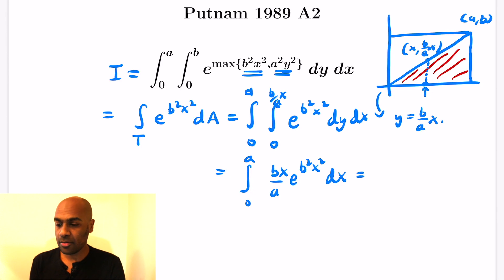Now we can actually integrate this with a substitution. Doing that we'll get, because we have a b squared x squared in the exponent, the derivative of that is 2b squared x. That allows the substitution, but we have to remind ourselves that our integral is actually twice the integral over the triangle by the symmetry with the other triangle on top.